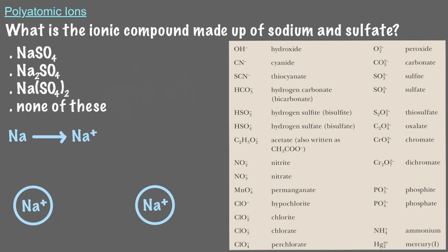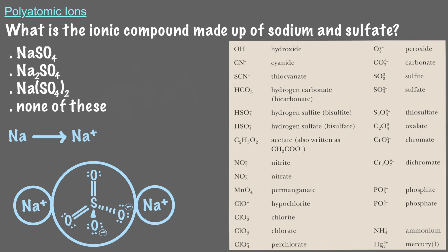That means we need 2 sodiums to balance out the negative 2 charge of the sulfate ion. So the ionic compound made from sodium and sulfate is Na2SO4, sodium sulfate.